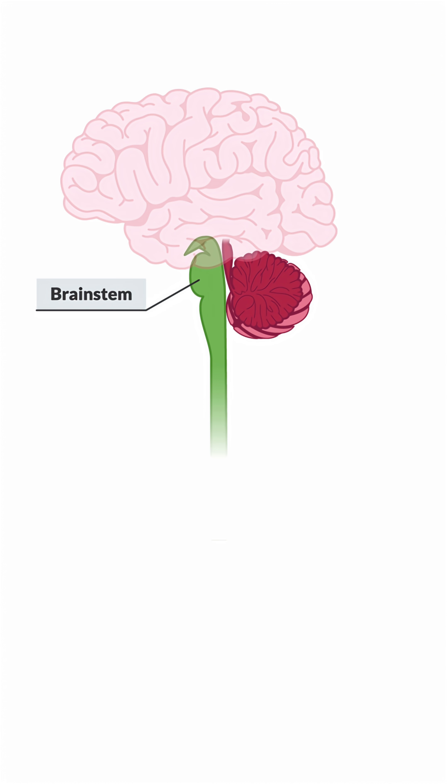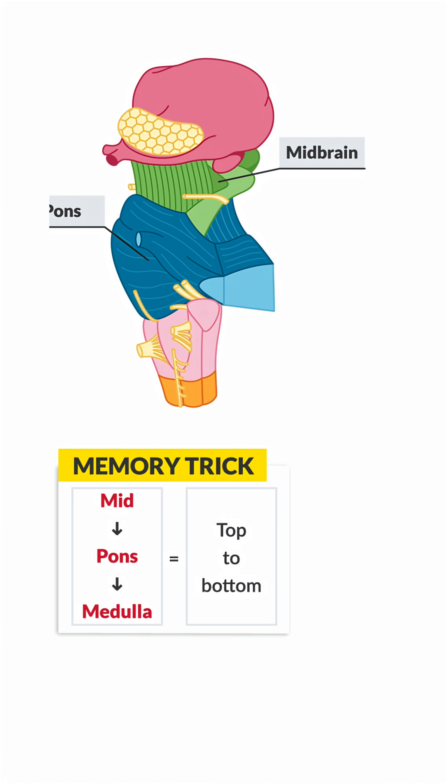The brainstem connects the brain to the spinal cord and has three main parts: the midbrain, the pons, and the medulla oblongata.